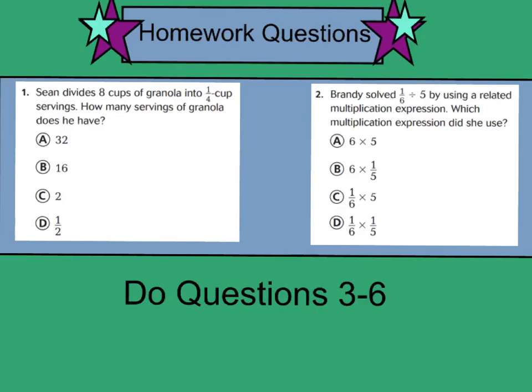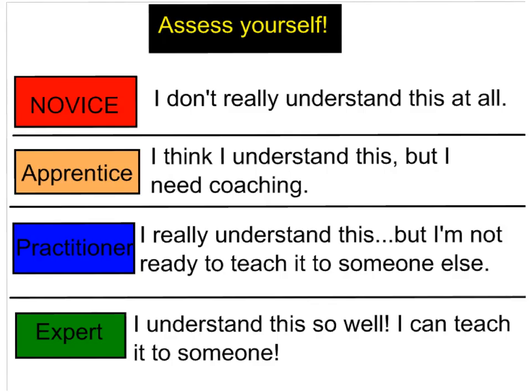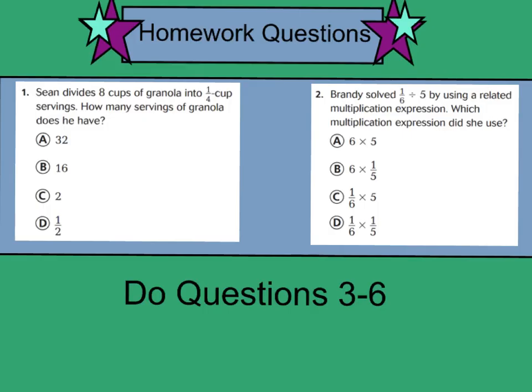I want you to do numbers one and two on the back side to show how you understand what we've done in this lesson so far. Then I want you to do questions three through six for review of previous material. Please put down either one for novice, two for apprentice, three for practitioner, or four for expert if you really understand this. We will check these in class tomorrow, so please make sure that you have your GoMath book ready. Have a great night. Bye-bye.